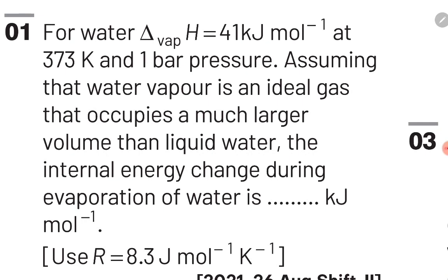The second question of this chapter is: for water, ΔH_vaporization = 41 kJ/mol at 373 K and 1 bar pressure. Assuming water vapor is an ideal gas occupying a much larger volume than liquid water, the internal energy change during evaporation of water is? We will use the equation ΔH = ΔU + Δn_g RT. Here, ΔN_g = 1, because initially you have liquid water and after evaporation you have gaseous water (water vapor).